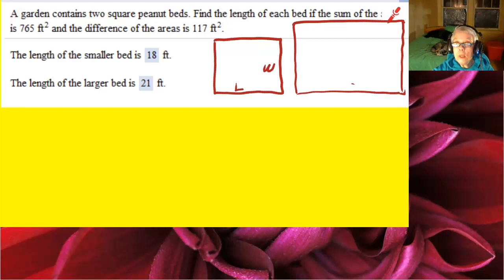The length and the width of the smaller bed will be L and W, and the length and the width of the larger bed will be A and B.